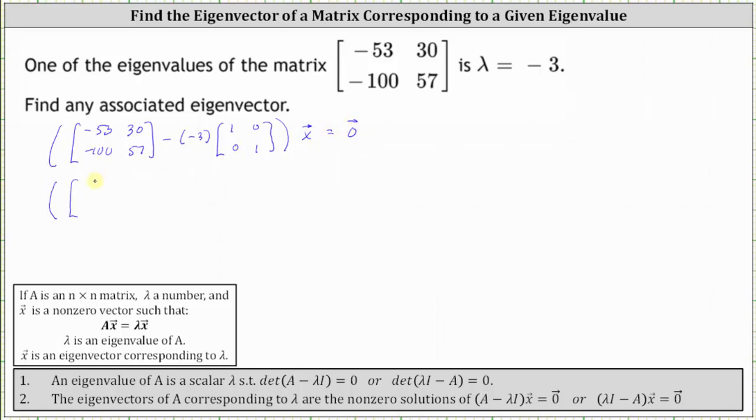Simplifying inside the parentheses, we have the given matrix A, and then for minus negative three times the two by two identity matrix, let's write that as plus the matrix three, zero, zero, three.